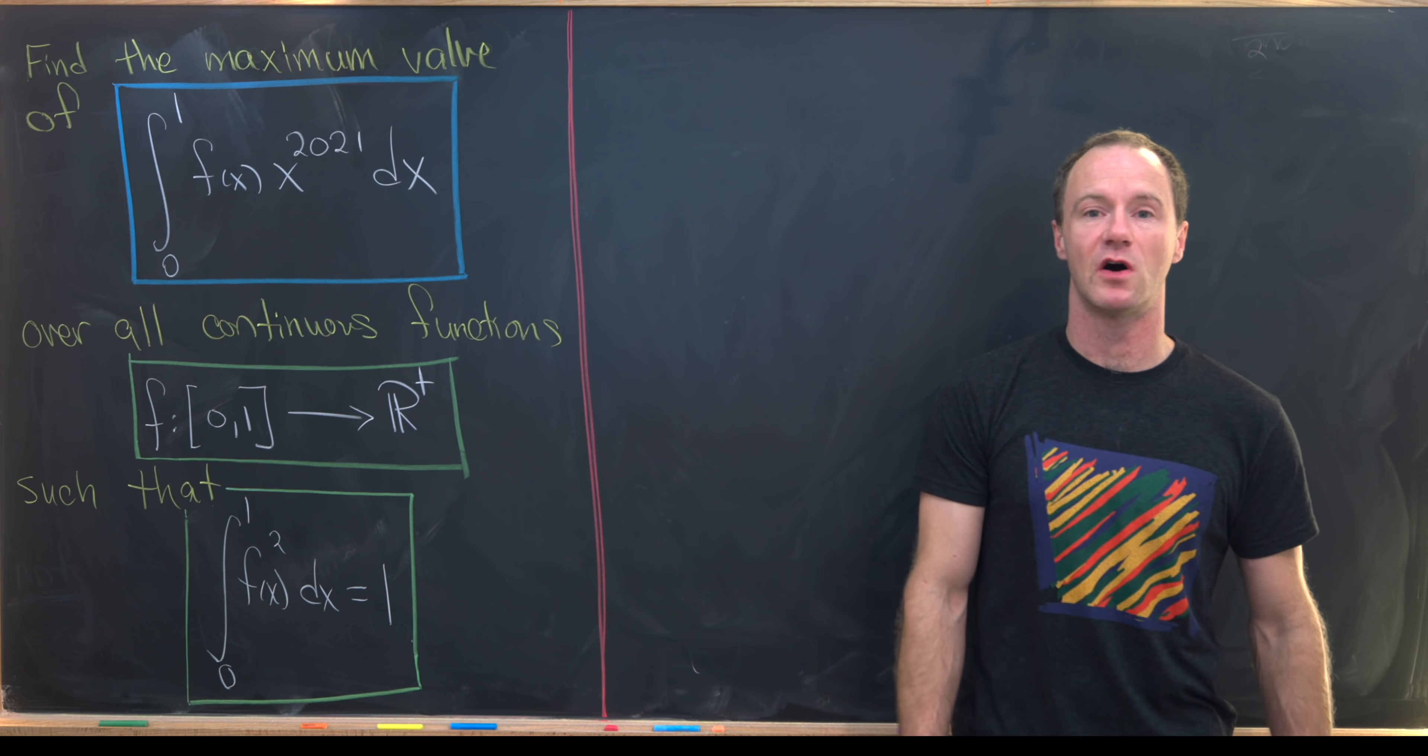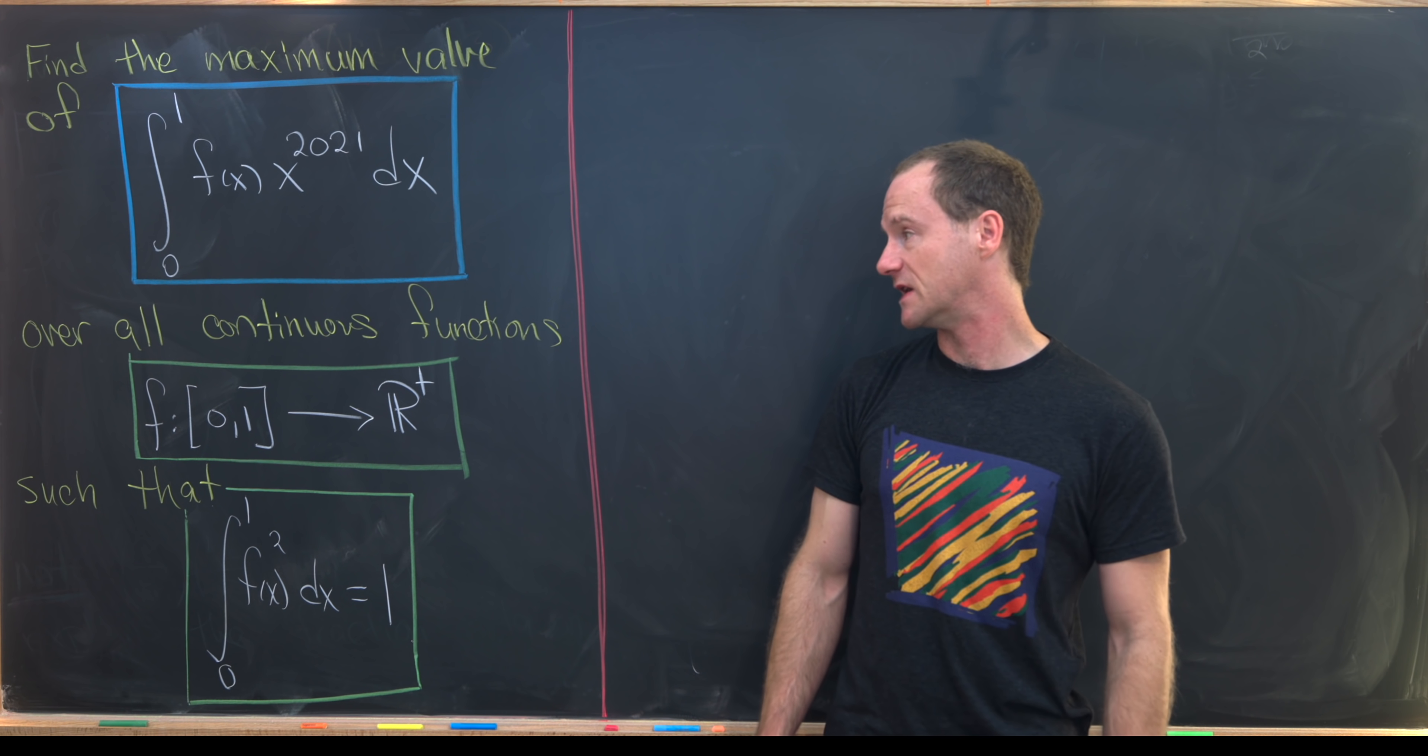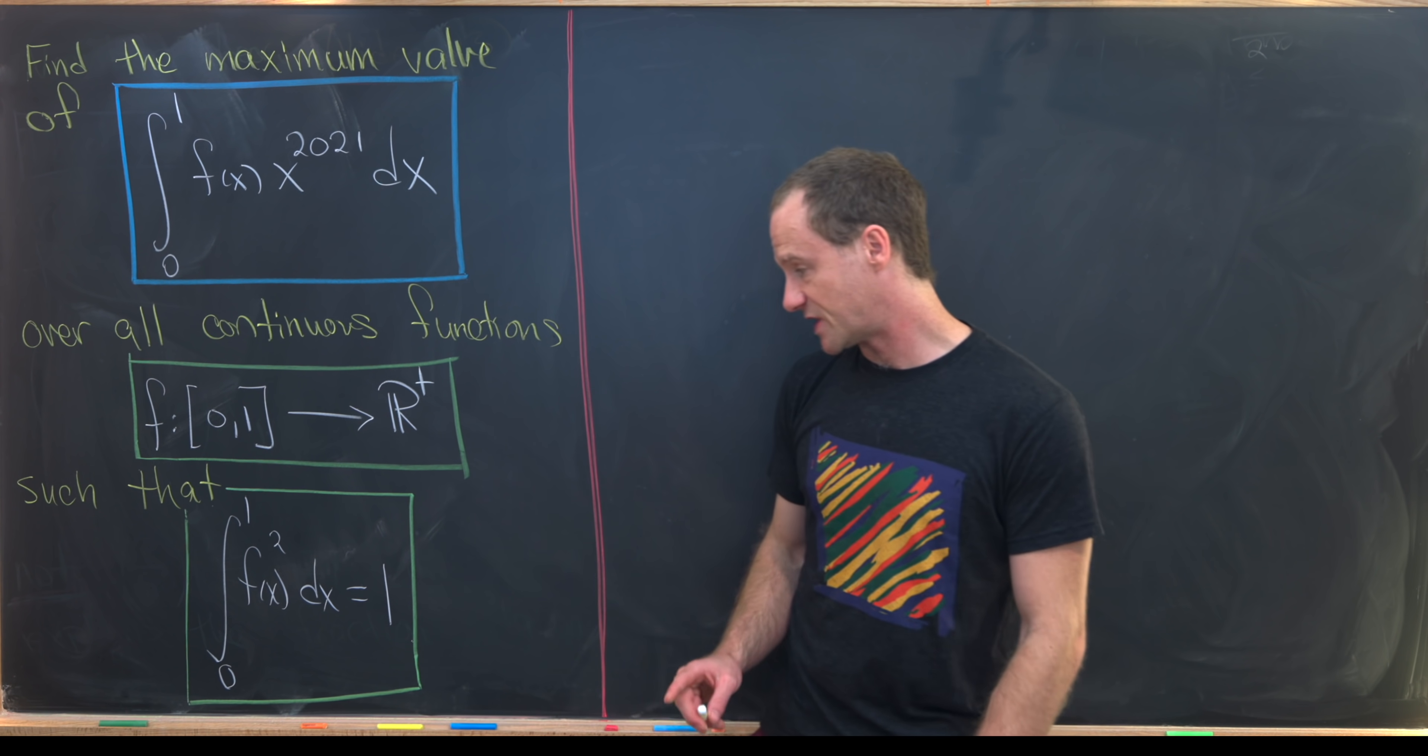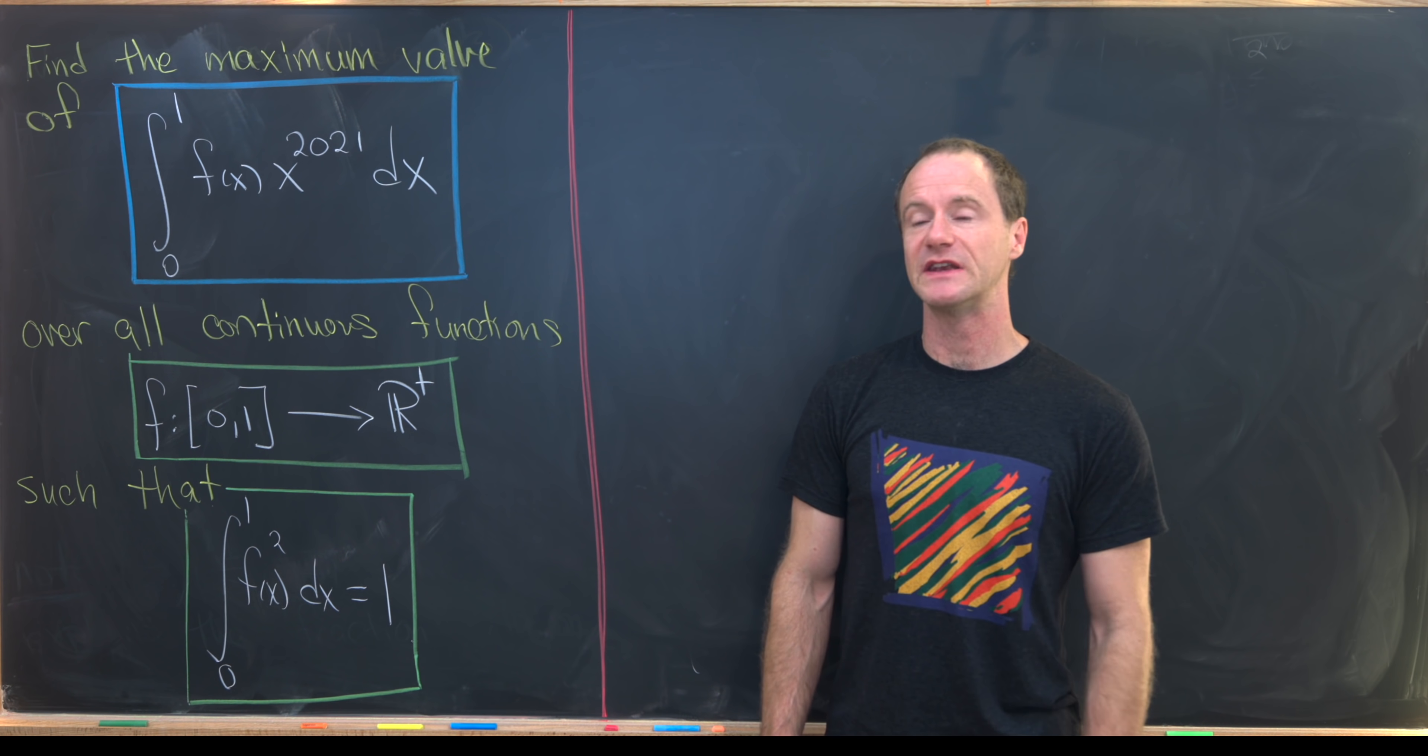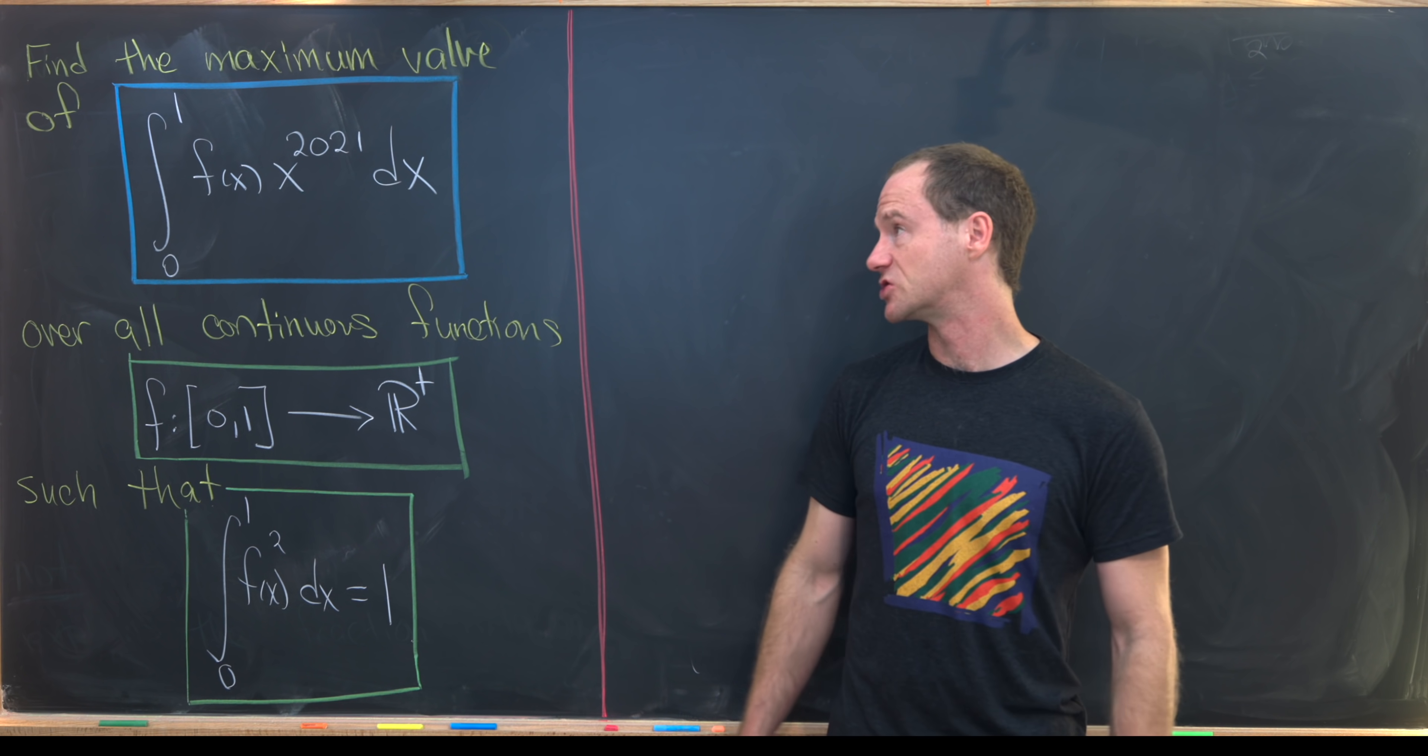Here I've got a nice maximum value problem involving an integral. Our goal is to find the maximum value of the integral from 0 to 1 of f(x) times x to the 2021 dx over all continuous functions f from [0,1] to the positive real numbers such that the integral from 0 to 1 of f squared of x dx equals 1. This is different than a standard find the maximum type problem because we're finding the maximum over all such continuous functions satisfying some rule, instead of over all such numbers.